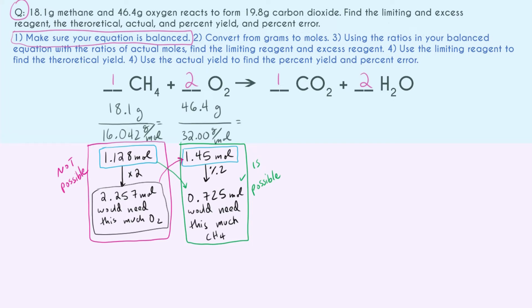So O2 is the limiting reagent. And we can tell from our math right here, with the 0.725 versus the 1.128, that we're going to have a leftover CH4—we're not going to use that all up—and that means that CH4 is the excess reagent. All right, so going through our problem, we now have the limiting and we have the excess reagent. Now let's get the theoretical, actual, and percent yield.